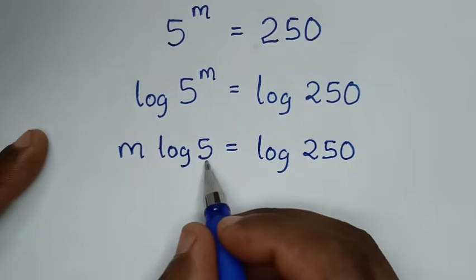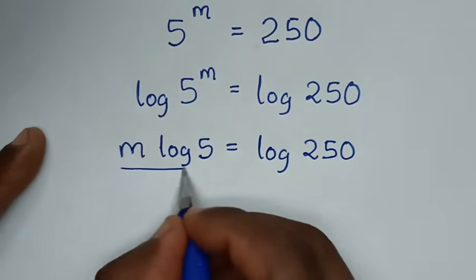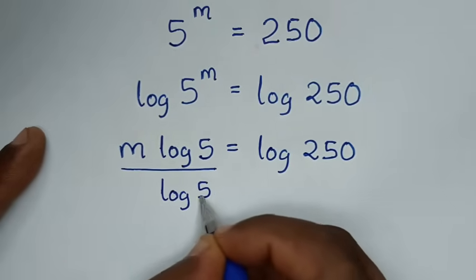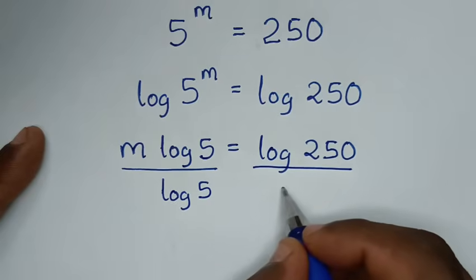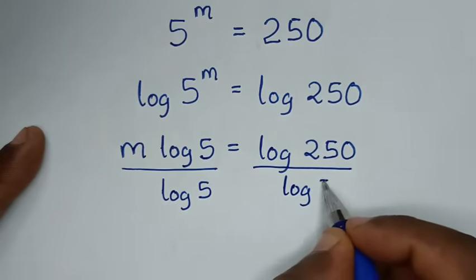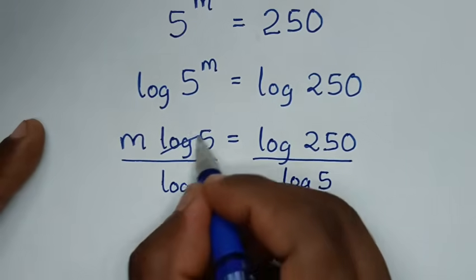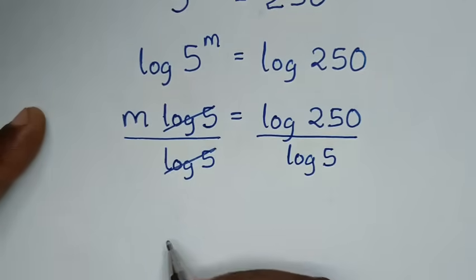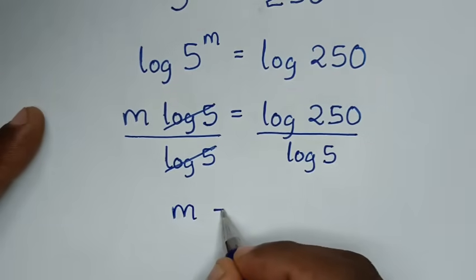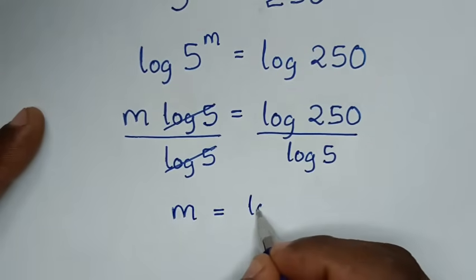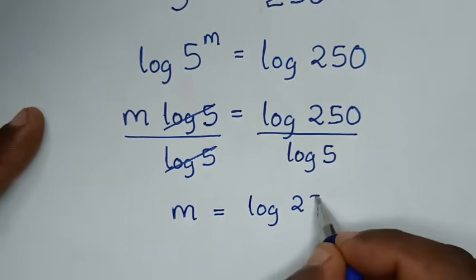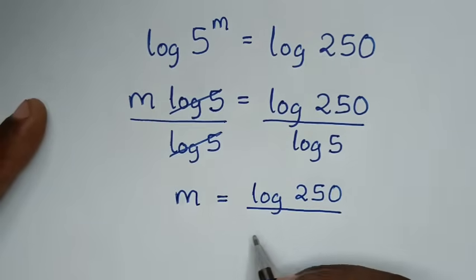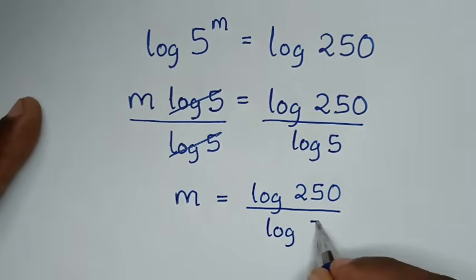Then we will divide by log of 5 on both sides. We cancel log of 5 on the left side, and it will be m is equal to log of 250 over log of 5.